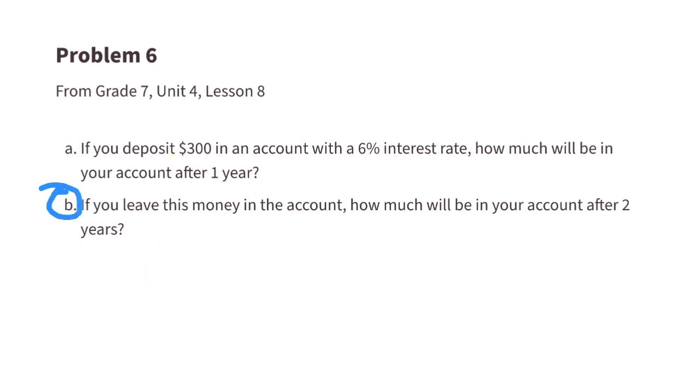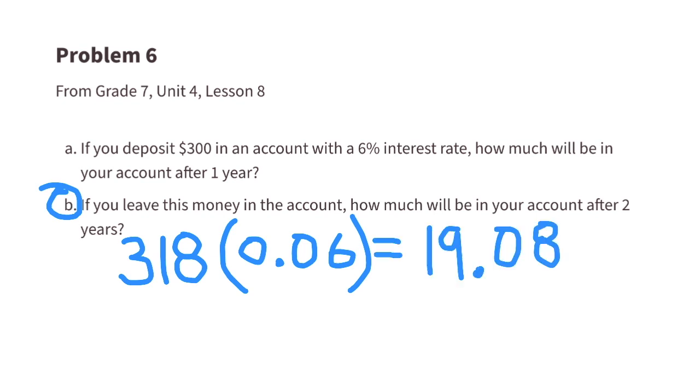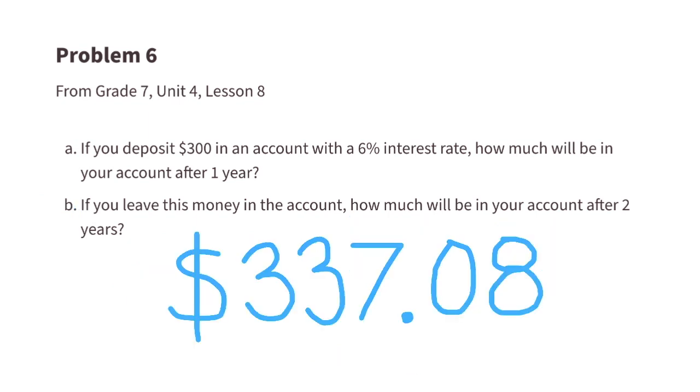Part B: if you leave this money in the account, how much will be in your account after two years? To include the second year, now we can do $318 times 0.06 to see how much interest we earn in the second year. That would be $19.08. So let's add the $318 from the first year to $19.08, that's the interest made in the second year, for a total of $337.08.